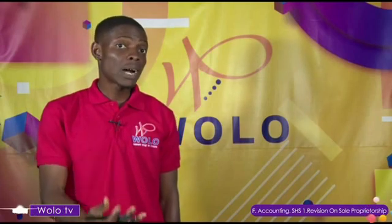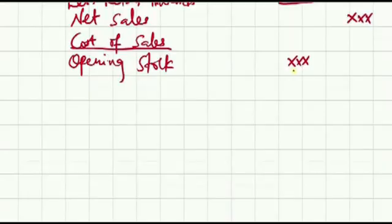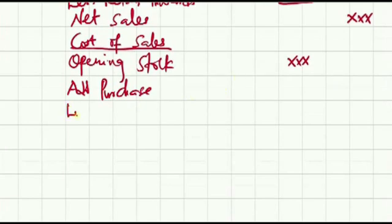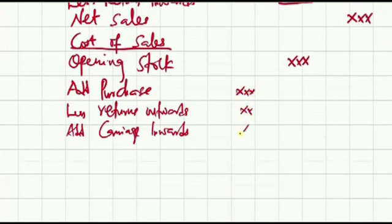The cost you incurred in carrying those goods to your business premises also needs to be added. Net purchases is determined by first lessing your returns outwards and adding carriage inwards. So we first put our gross purchases at the first column, then we less the returns outwards and add the carriage inwards, and the result is going to be your net purchases.